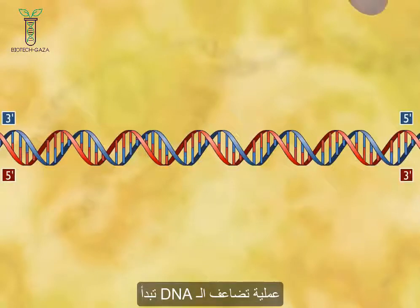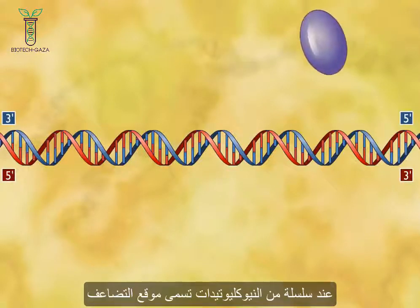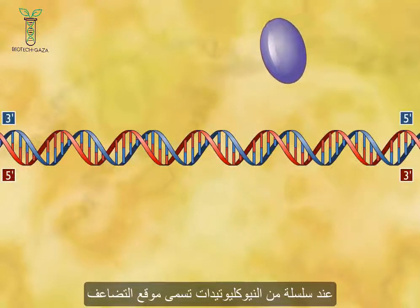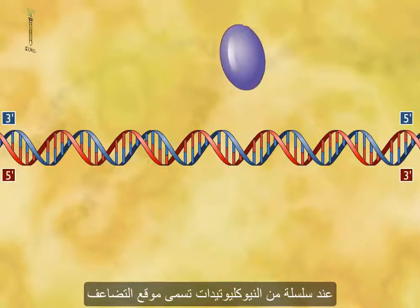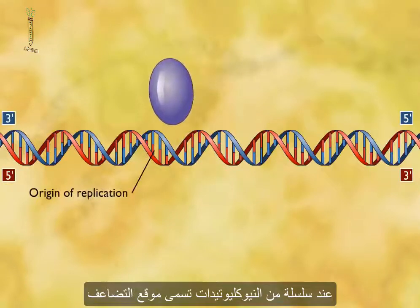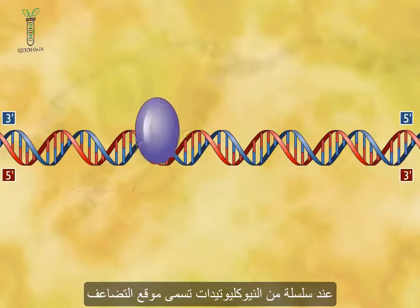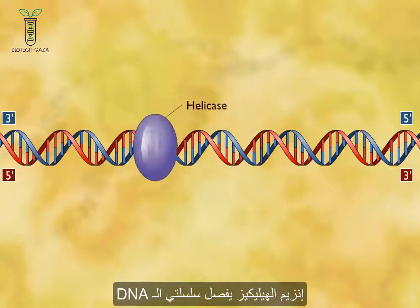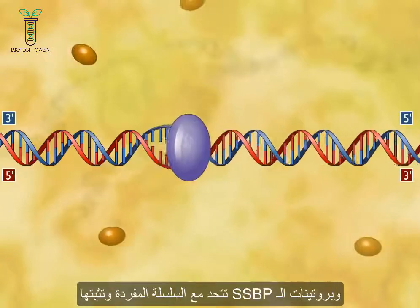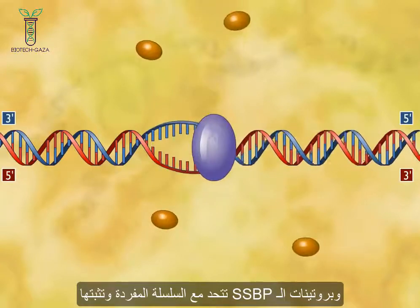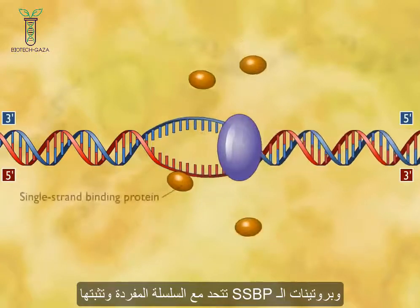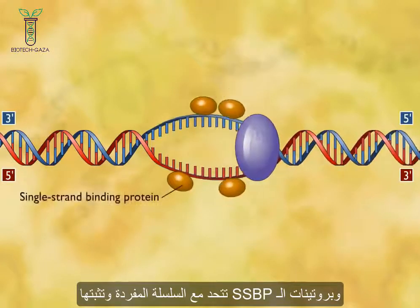The replication of DNA begins at a sequence of nucleotides called the origin of replication. Helicase unwinds the double-stranded DNA helix, and single-strand binding proteins react with the single-stranded regions of the DNA and stabilize it.